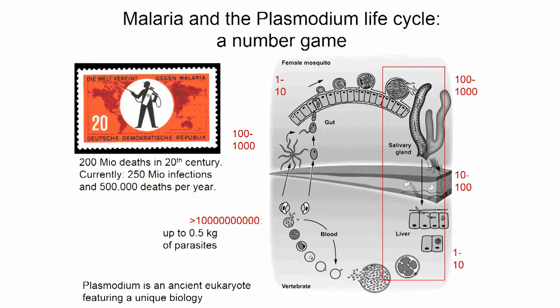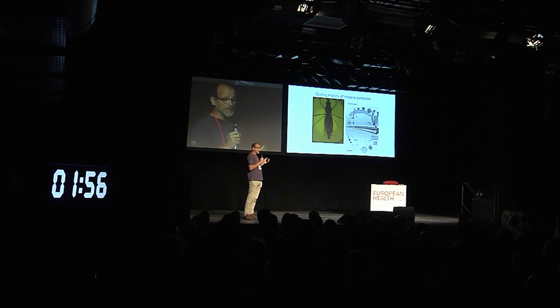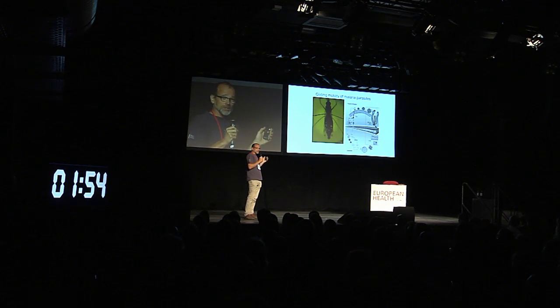For example, we have here a mosquito that is infected with a parasite expressing the green fluorescent protein. Each of these green dots corresponds to a cyst into which one parasite replicates into thousands of progeny parasites.